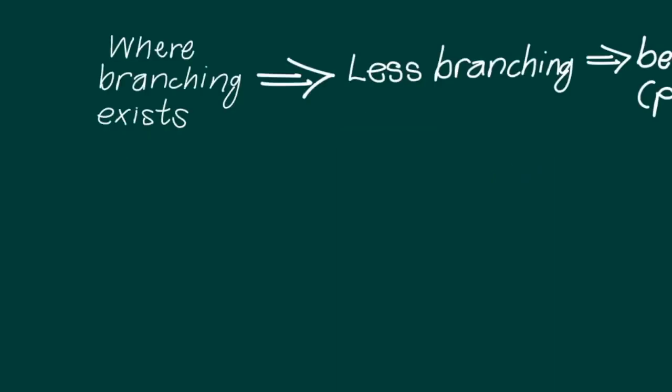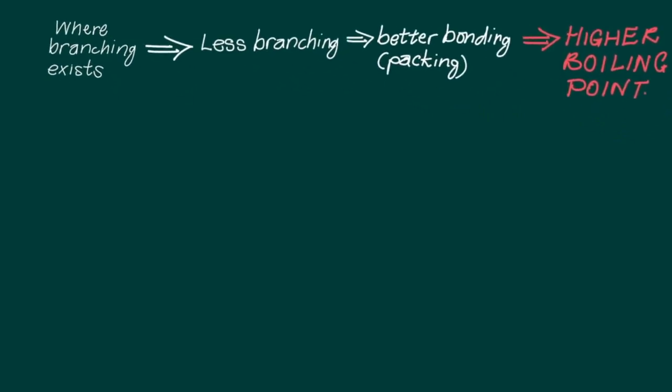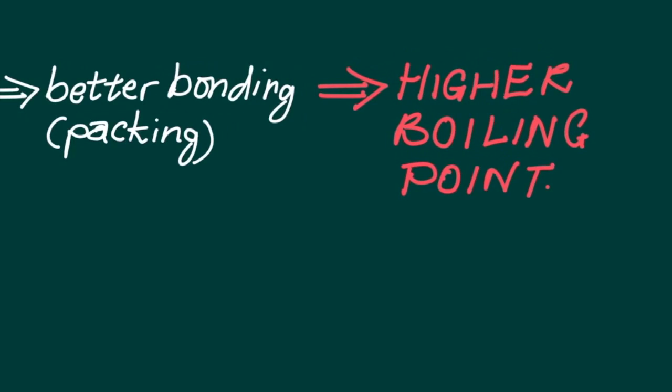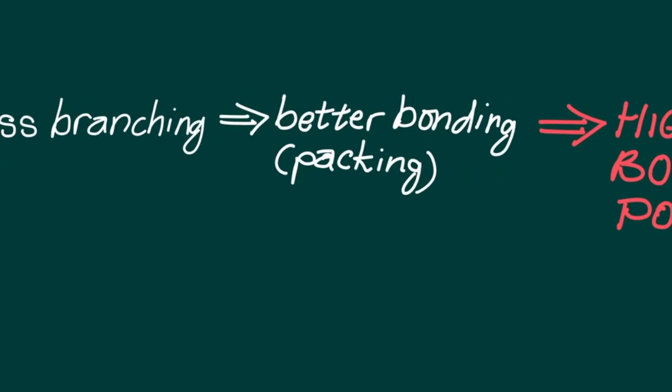But what about if there's branching in a chain, as is the case when the molecule becomes longer? Would these structural isomers, as they're called, have the same boiling point? If the basis for the boiling point lies in the strength of the intermolecular forces, specifically the London dispersion forces, then it follows that the less branching there is, the better the packing of one chain with another chain. So less branching would give rise to better bonding or packing and a higher boiling point.